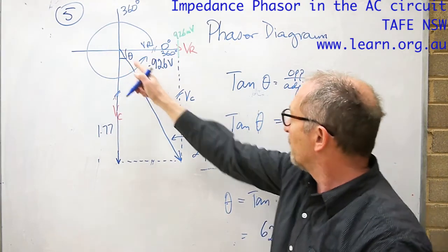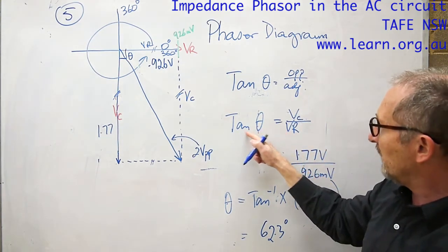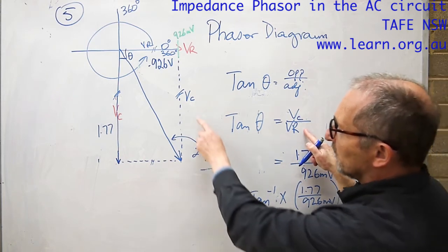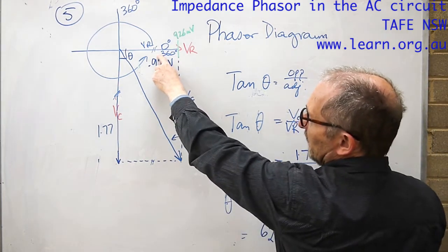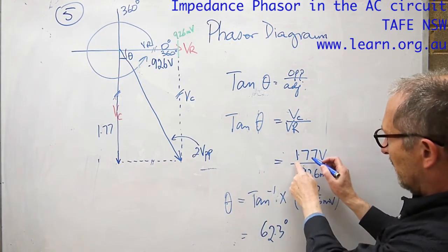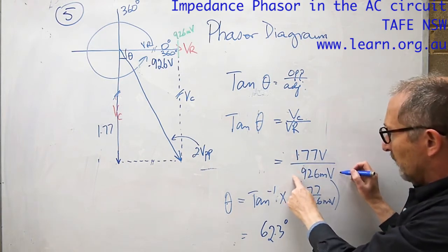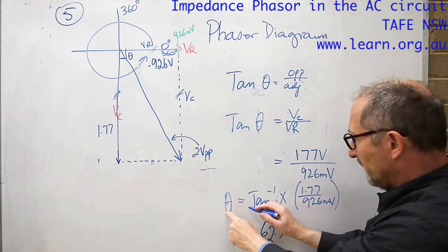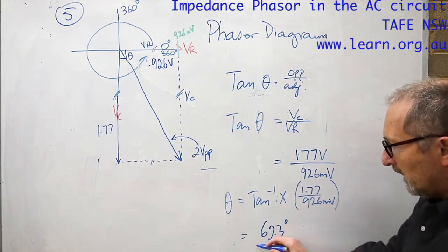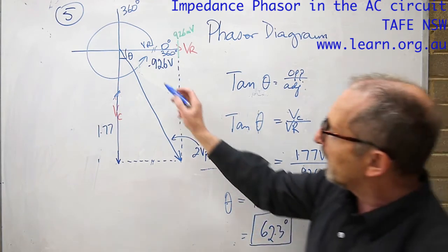To work out the angle theta, we know that theta is the opposite over the adjacent and then tan theta is going to be VC divided by VR. So here's VC and here's VR. To find out theta, here's the two voltages I have to use: VC being 1.77 volts, VR 926 millivolts. Theta then becomes inverse tan multiplied by this ratio, and that takes us to 62.3 degrees and that is the angle there.